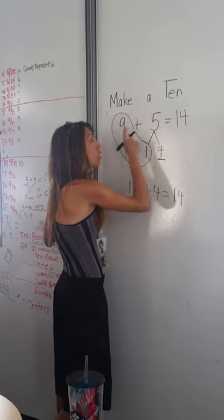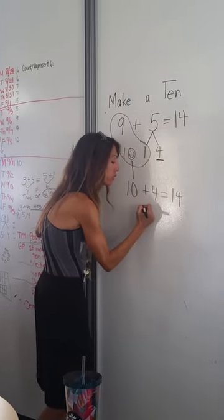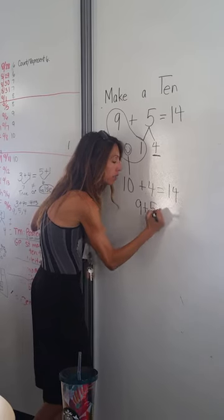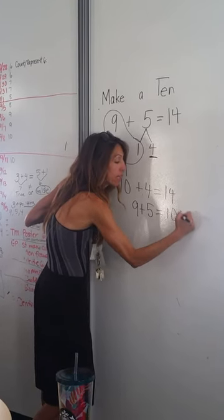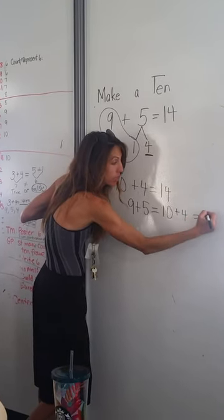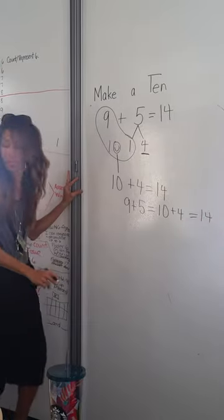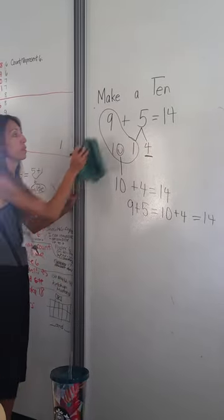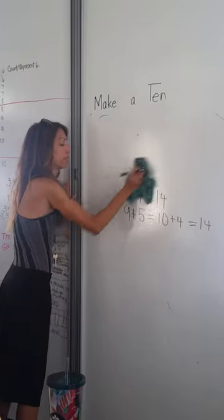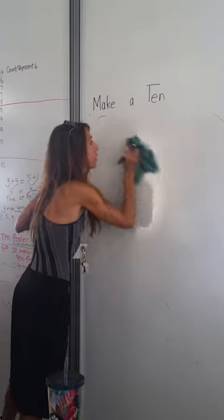And then the total of 9 and 5 is 14, or you could say 9 plus 5 is the same as 10 plus 4, which is actually the same as 14. Now it can also be done with numbers other than 9. This is where some of the kids make errors.